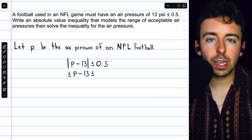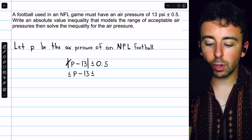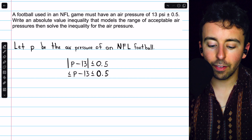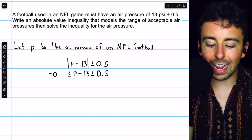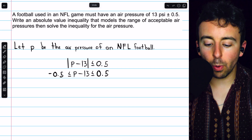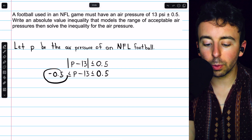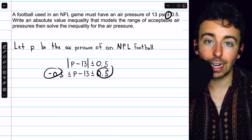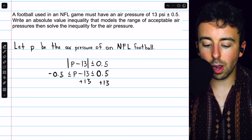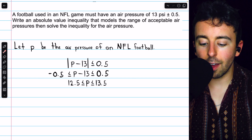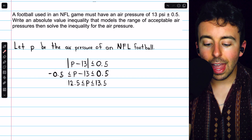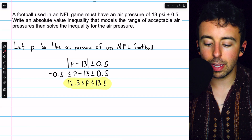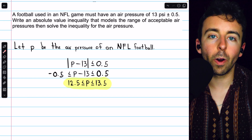Just like in the previous example, we write |P − 13|, which is the distance between our air pressure and 13, and we know it has to be within 0.5, so |P − 13| ≤ 0.5. That answers the first part. To solve for P, we get rid of the absolute value bars: −0.5 ≤ P − 13 ≤ 0.5. This is just like the plus or minus in the problem. Adding 13 to all sides: 0.5 + 13 = 13.5 and −0.5 + 13 = 12.5, giving 12.5 ≤ P ≤ 13.5. This describes the legal air pressures for an NFL football.